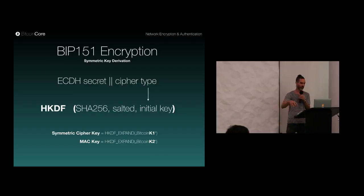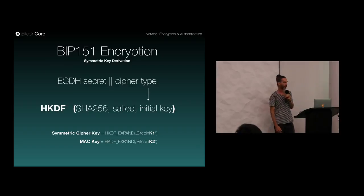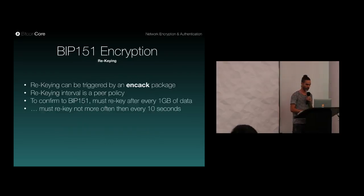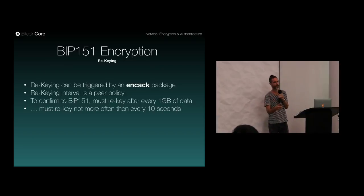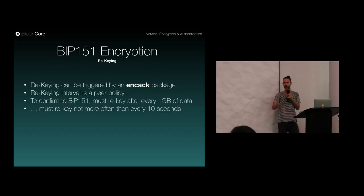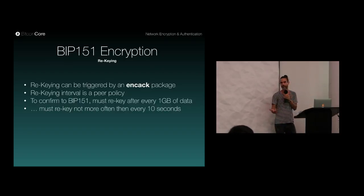Once we have the shared secret and the cipher type, we can derive keys with HKDF — a form of key derivation — generating two keys: one for symmetric encryption and one for the MAC tag. The proposal also includes re-keying as a peer policy. There are certain boundaries: re-keying must happen after one gigabyte of data, and not more often than every ten seconds. This provides forward secrecy.